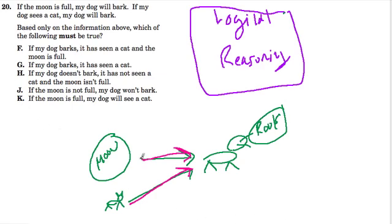F says if my dog barks, it has seen a cat and the moon is full. The key word here is 'and'. Well, it could be that the moon is full and the cat's seen and the dog's going to be barking a lot, but if the dog is barking we don't know if it saw a cat or if the moon is full - either one could have caused the dog to bark. So we don't know that both of them are true. It could be, but only one of them has to be true, so F is out.